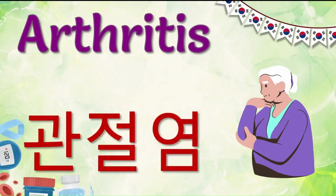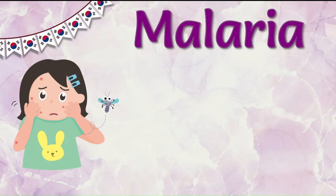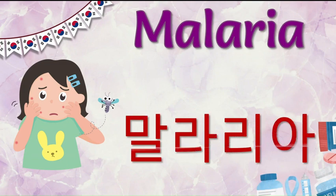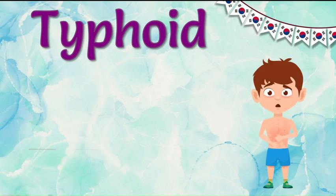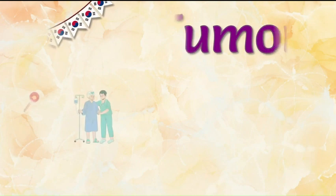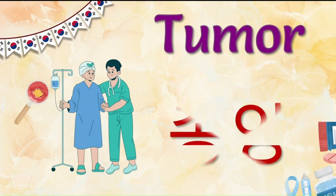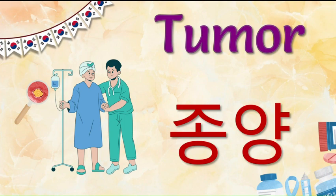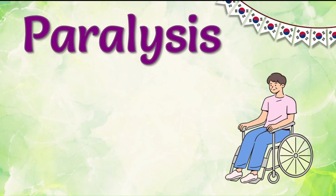Now let's see how to say malaria in Korean — it is 'malaria,' which as you can see is a loan word. Next comes typhoid, and that is 'jangtibusu.' Here comes tumor, and this is called 'jongyong.' Now let's see how to say paralysis in Korean, and that is 'mabi.'